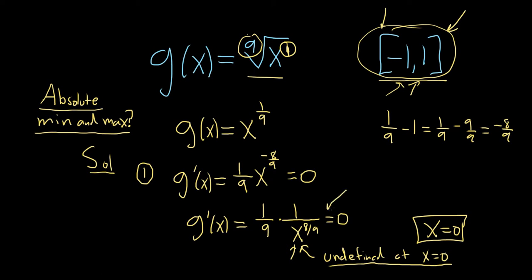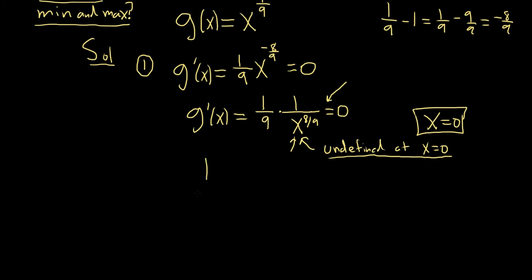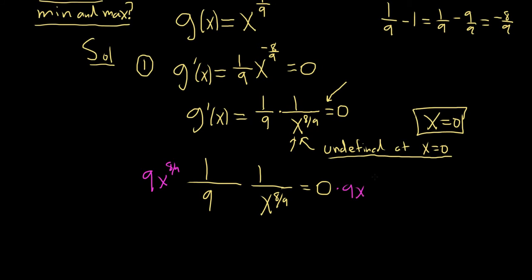Now, this expression will never be equal to 0 — it's impossible. If you try to solve it, you would clear the fractions by multiplying by 9x to the 8 ninths. But then everything cancels, so you get 1 equals 0 times anything, which is 0. So you get 1 equals 0 — that's impossible. So the derivative is never 0, and the only critical number is x equals 0.